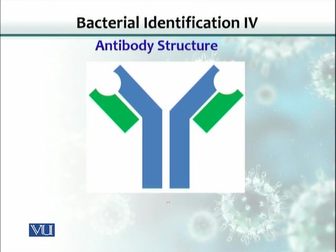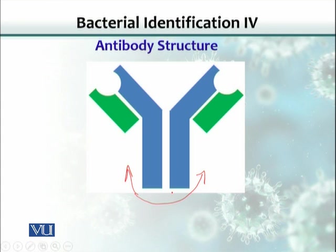This is a typical structure of an antibody. Remember that an antibody molecule is a protein, and all proteins are very good antigens. So using this antibody, we can produce another antibody against it — called an anti-antibody. Keep that in mind because it will be used in ELISA.